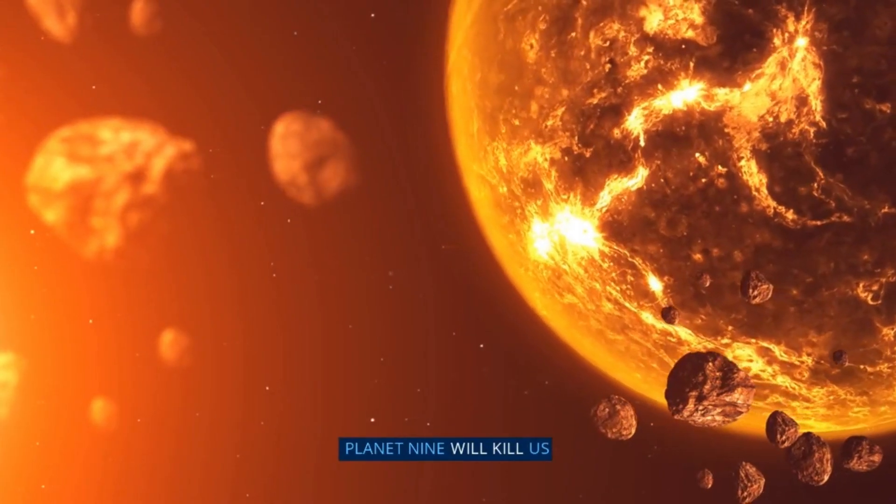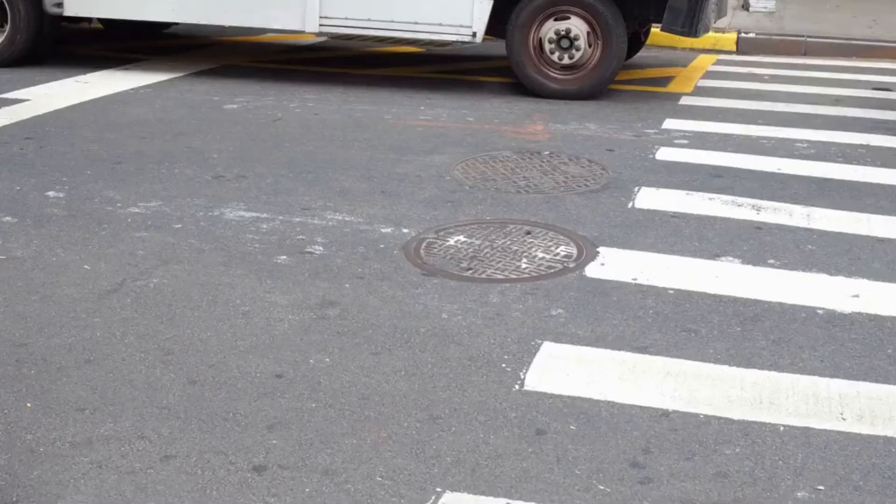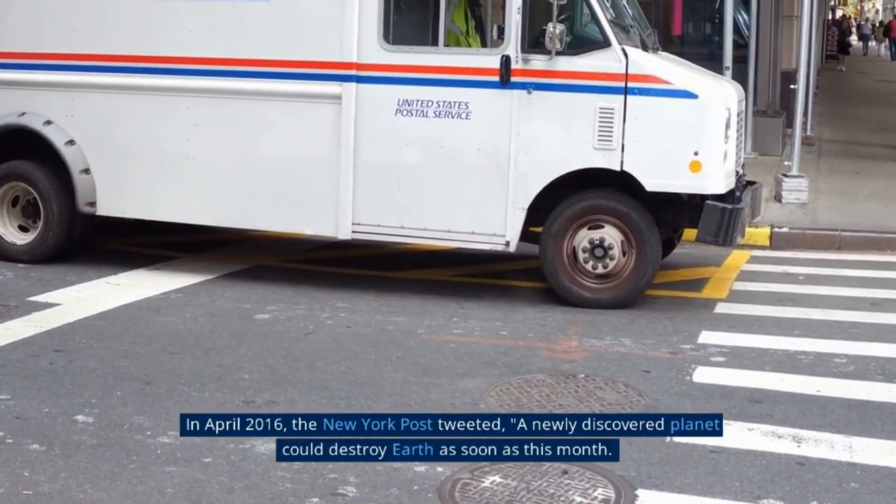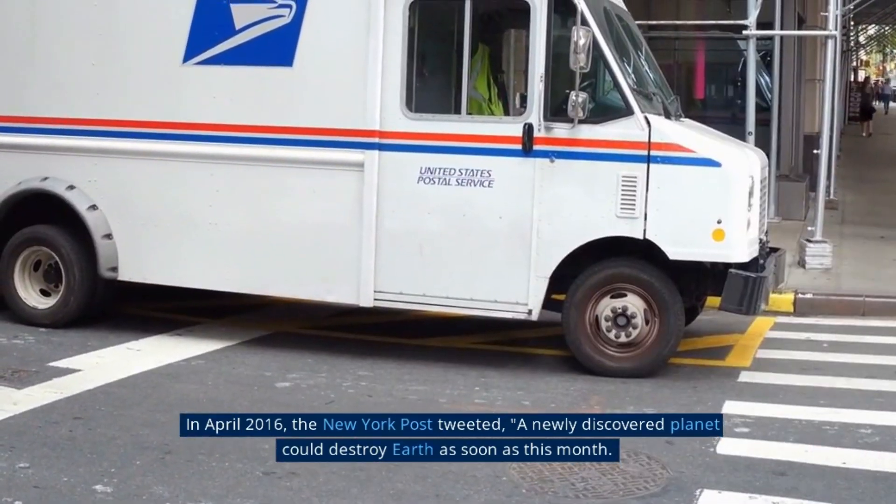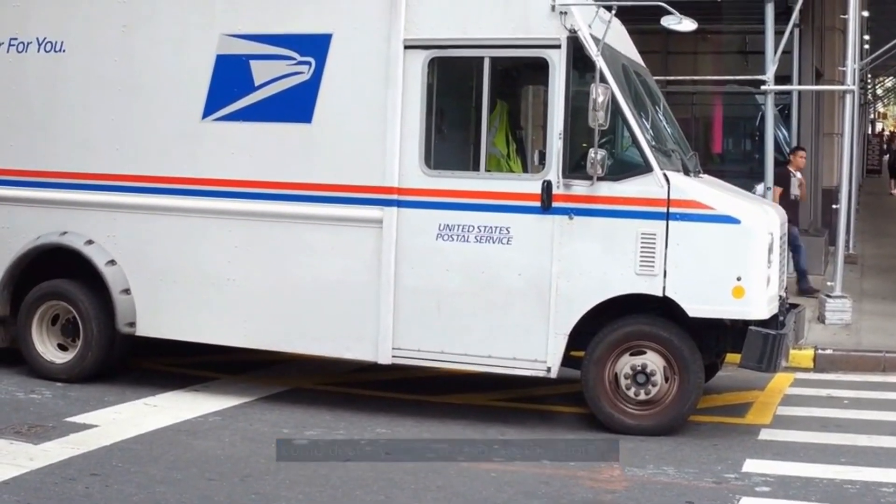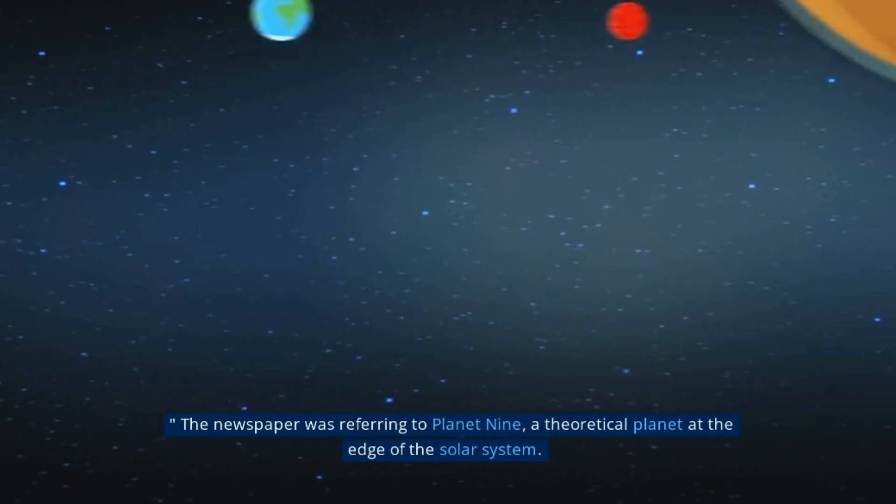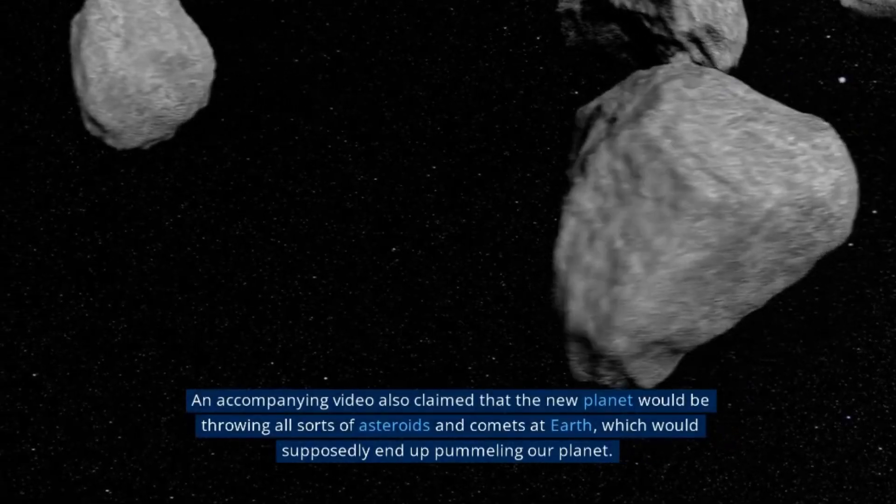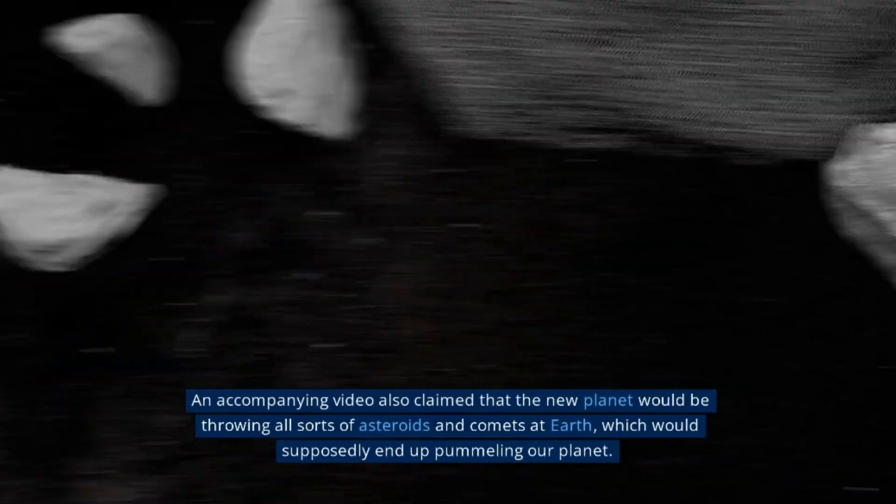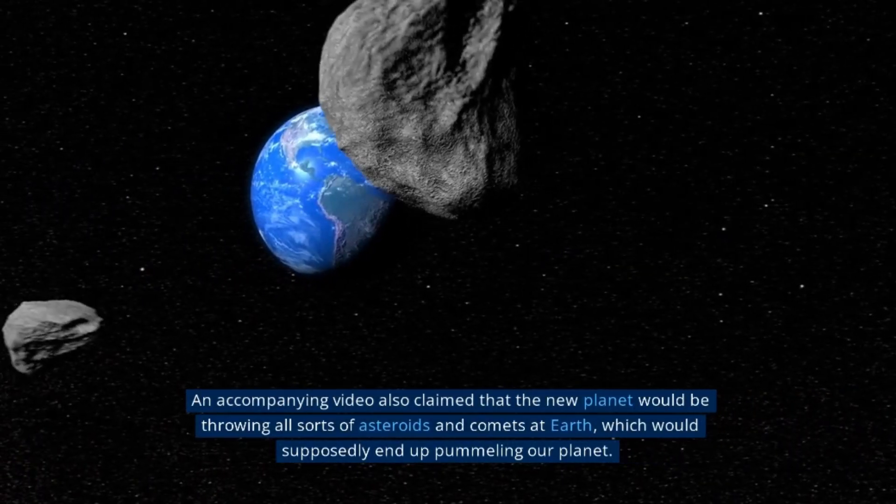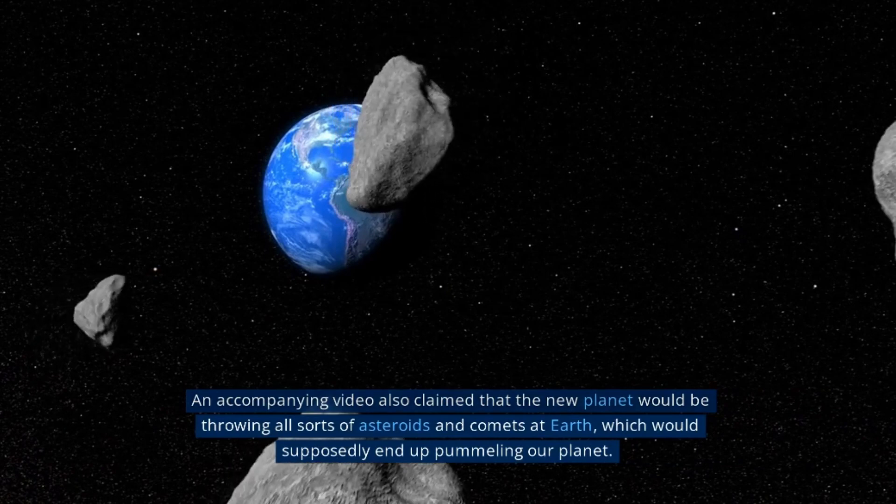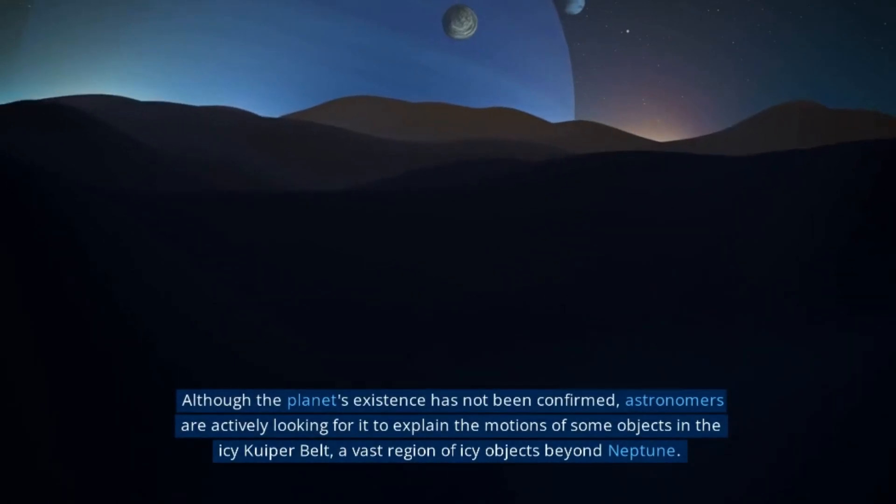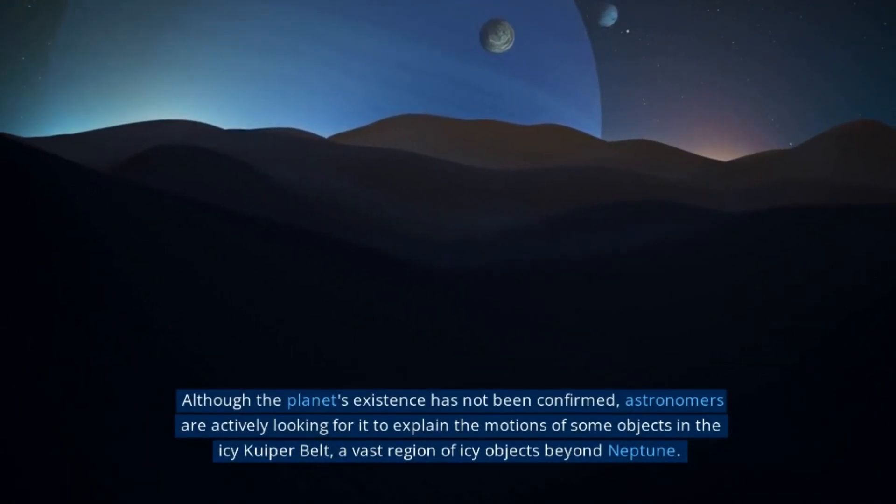Planet 9 will kill us. In April 2016, the New York Post tweeted a newly discovered planet could destroy Earth as soon as this month. The newspaper was referring to Planet 9, a theoretical planet at the edge of the solar system. An accompanying video also claimed that the new planet would be throwing all sorts of asteroids and comets at Earth, which would supposedly end up pummeling our planet.